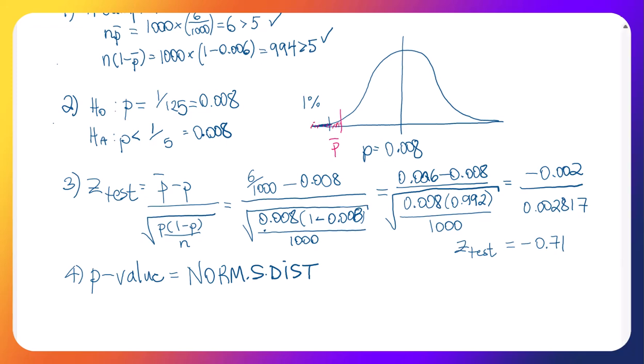I don't need to do a 1 minus, so I just do norm.s.dist. I put in the negative 0.071 for the Z test result, put in true or 1 for cumulative, and see what I get. And I'm just going to pause the video and pull up that Excel solution.